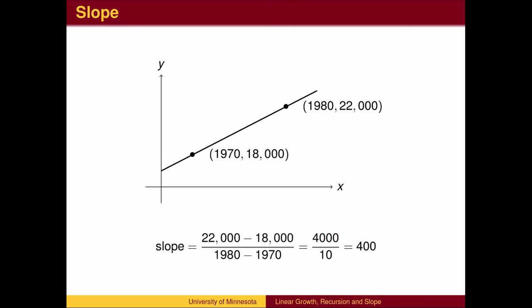This rate of change is called the slope of the line. It is calculated by finding the difference in the y-coordinates, the population values, and dividing by the difference in the x-coordinates, the time values.